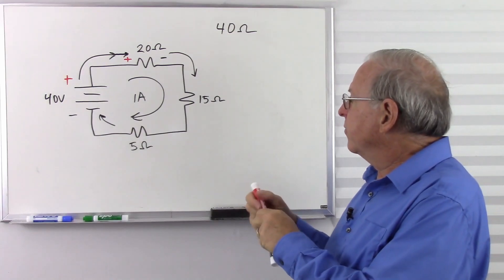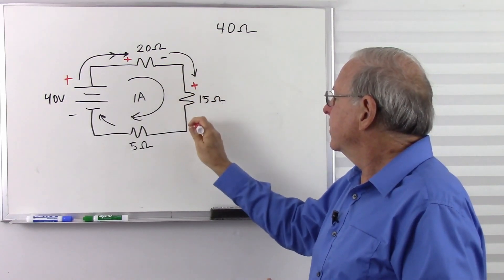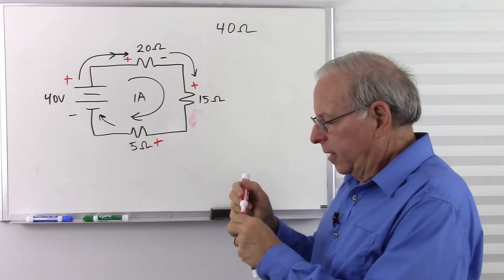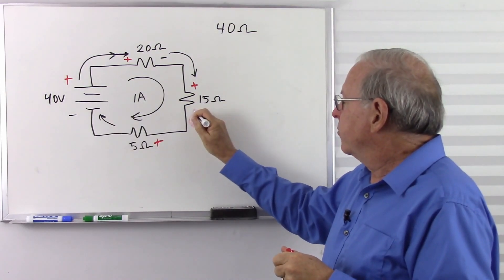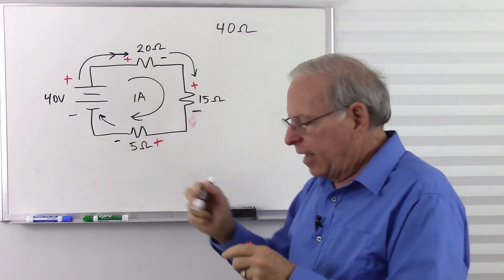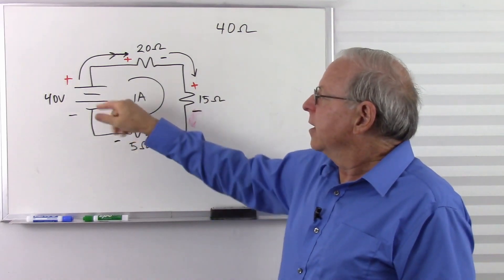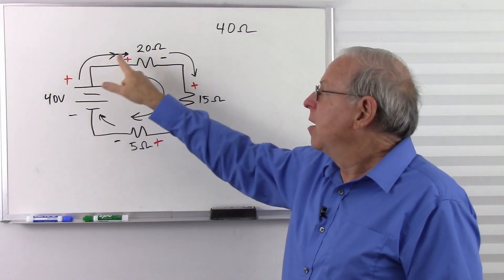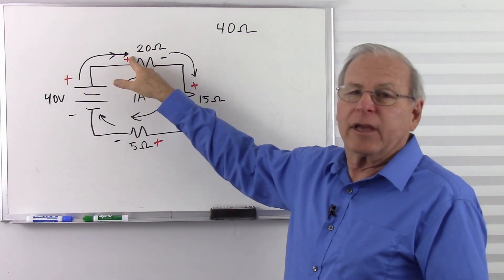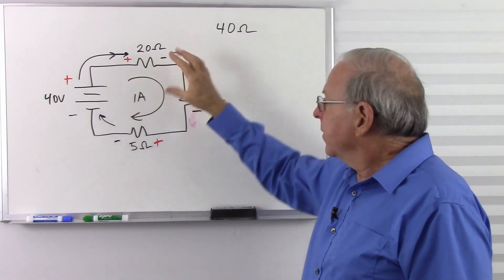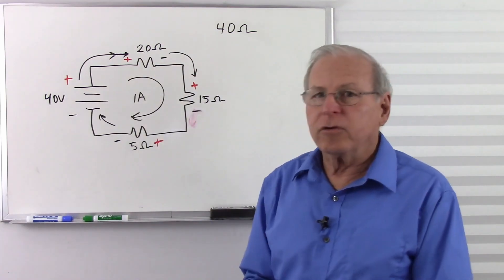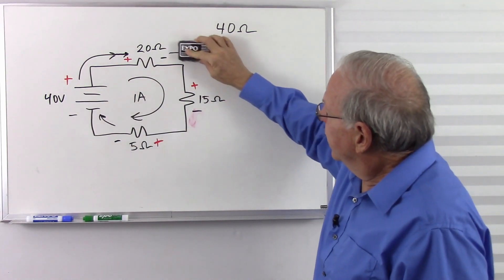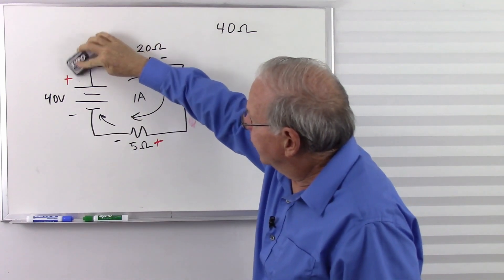And we have the same thing around the rest of the circuit. So, positive where the current enters the resistor, and negative where the current exits the resistor. So, we have positive where the current exits a source, positive where it enters a consumer. So, all of these have opposite polarities to the current source. So, that's the basics of the polarity in a series circuit.